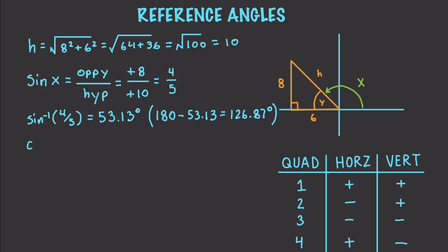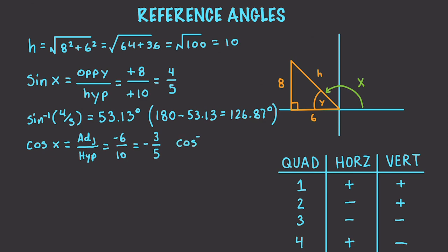Now let's do the same with cosine. Cosine is adjacent over hypotenuse — remember SOH-CAH-TOA. The adjacent side is negative in this situation, so it's negative 6. The hypotenuse is always positive, giving us negative 3/5. If you put the inverse cosine of negative 3/5 into your calculator, you get 126.87 degrees directly.